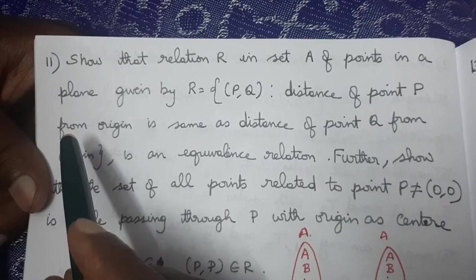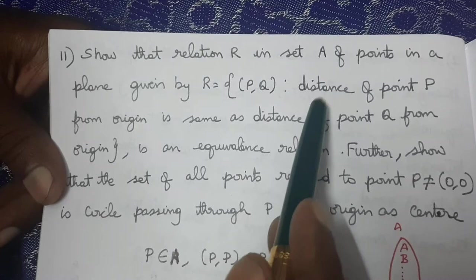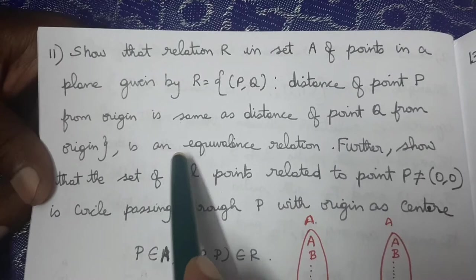Welcome to Max Very Easy. Exercise 1.1. Show that relation R in the set A of points in a plane given by R equal to {(P, Q) such that distance of point P from origin is same as distance of point Q from origin} is an equivalence relation.